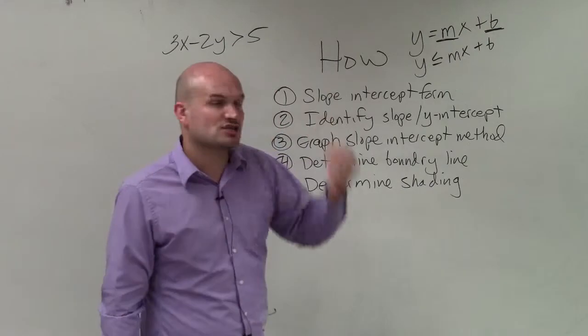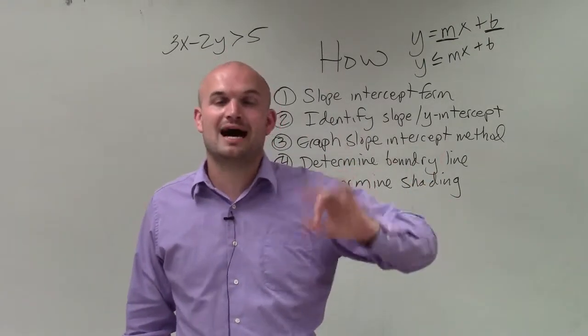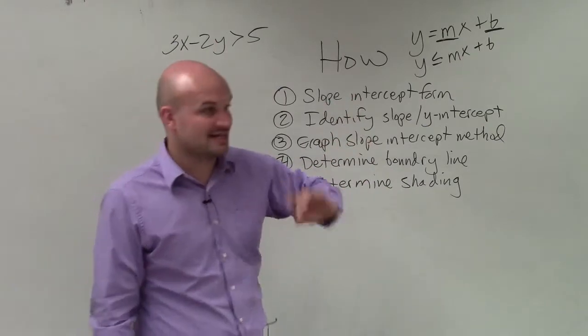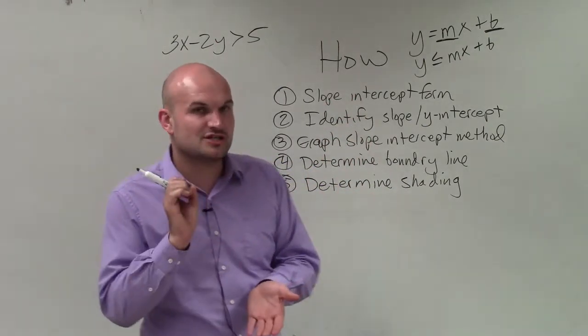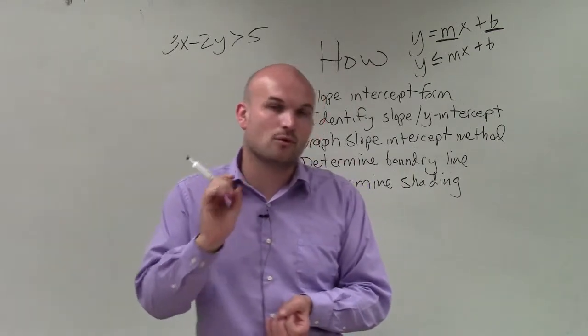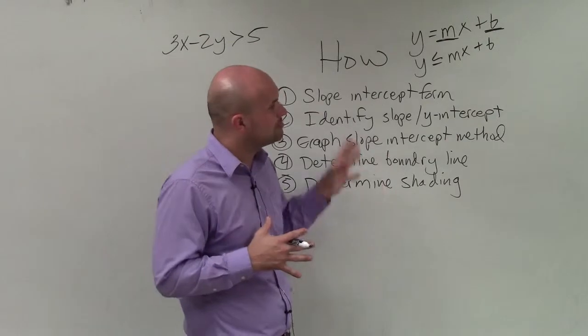Then, you use the slope to determine the next point that's going to be on your boundary line, in this case, or your graph. Again, slope is going to be the change in any two coordinate points of the y over the x, or your rise over run. So you use the slope to find your next point.